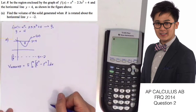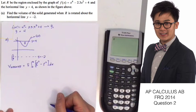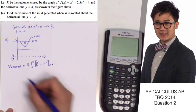The washer method gives us the formula: π times the integral of the big R (outer radius) squared minus the small r (inner radius) squared, integrated with respect to x from a to b. Let's look at the graph of the function to find the lower and upper limits.